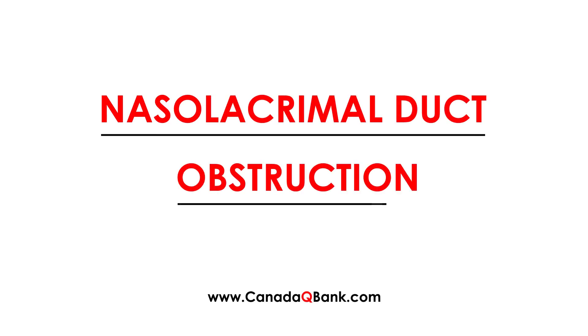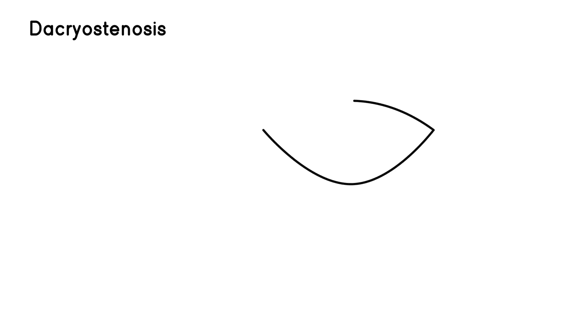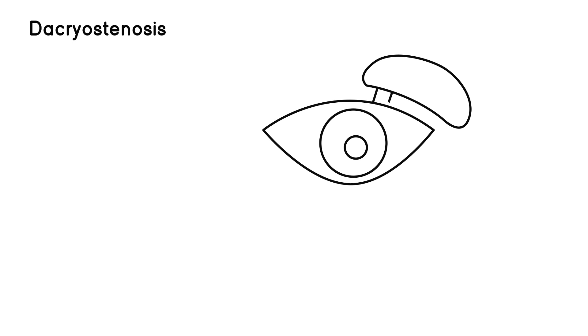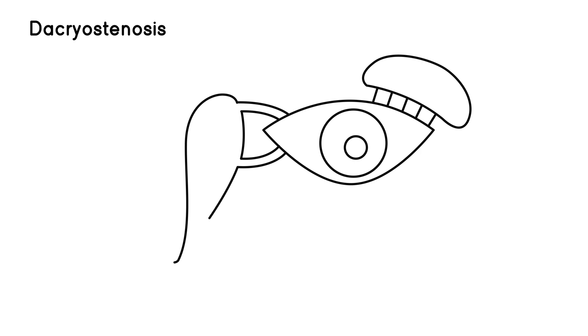Nasolacrimal duct obstruction is the topic, sometimes also referred to as dacrostenosis. The best way to talk about this is to draw a diagram, label all the different parts, explain what each of these parts are doing, and then take it from there — drawing all the players involved and then explaining what each of these do.